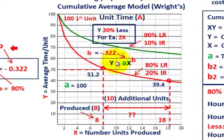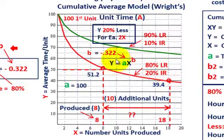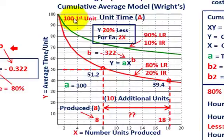We're going to look at two different calculations: our average time per unit basis and our total time. Our formula is Y equals A times X raised to the power of B, where Y is average time, A is the cost of the first unit set at 100, and X is the number of units produced. We're based on an 80% learning rate and a 20% improvement rate.